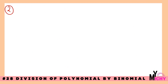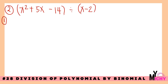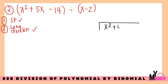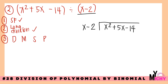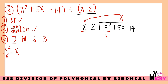Let's have example number 2: x squared plus 5x minus 14, divided by x minus 2. The dividend is already in standard form. Writing in long division: x squared plus 5x minus 14 inside, and x minus 2 as the divisor outside. Divide step: x squared divided by x equals x (imaginary 1, so just x). Write x on top. Multiply: x times x equals x squared.